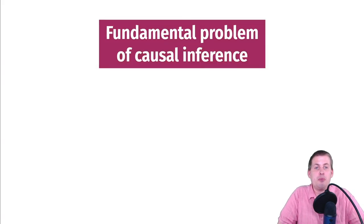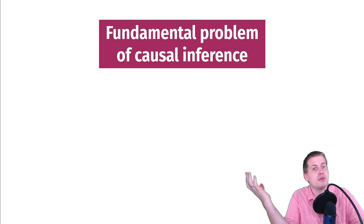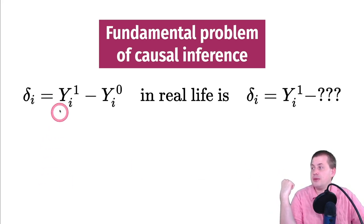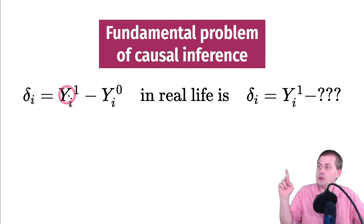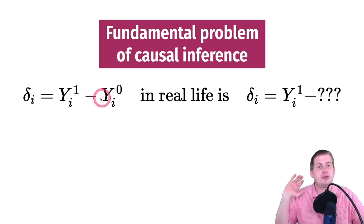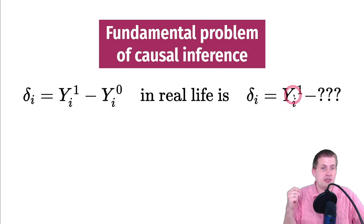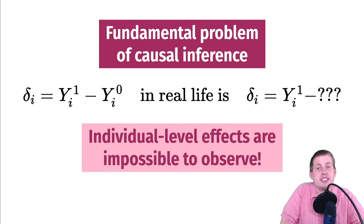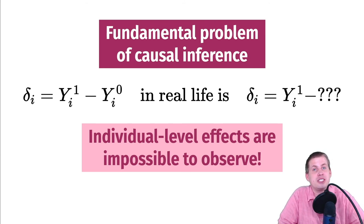We run into the fundamental problem of causal inference: you cannot observe individual-level counterfactuals. To estimate the causal effect for an individual i, you would need to measure their outcome when they're in the program and subtract the outcome when they're not. But in real life, you either see their outcome if they're in the program or if they're not — you can never see both at the same time. Individual-level effects are impossible to observe; we don't have a time machine.